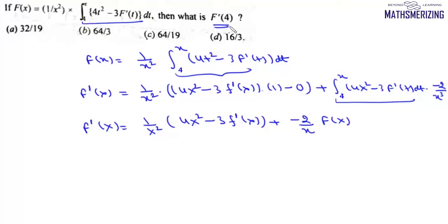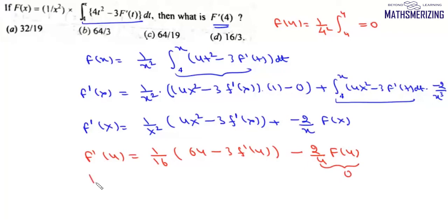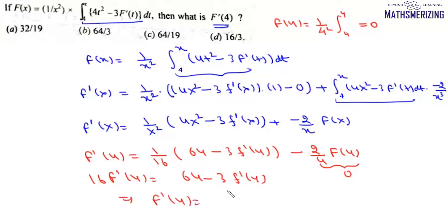Now we need to find the value of f'(4). So we'll put x as 4. We'll get f'(4) equals (1/16)(64 − 3)f'(4) minus (2/4)f(4). Now what is f(4)? f(4) will be (1/16) times the integral from 4 to 4, and when we have the same limits the value of the integral is 0. So we can write 16 f'(4) = 64 − 3 f'(4), and from here f'(4) = 64/19, and that's your option C.